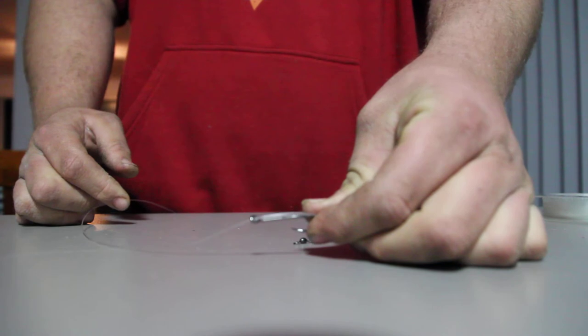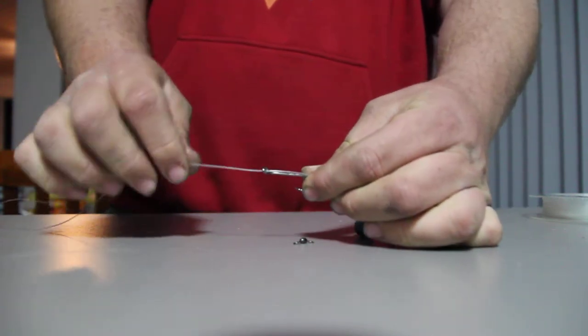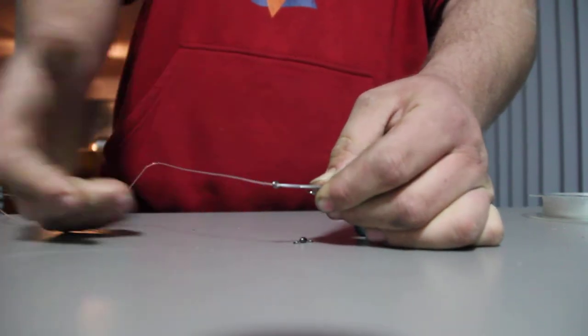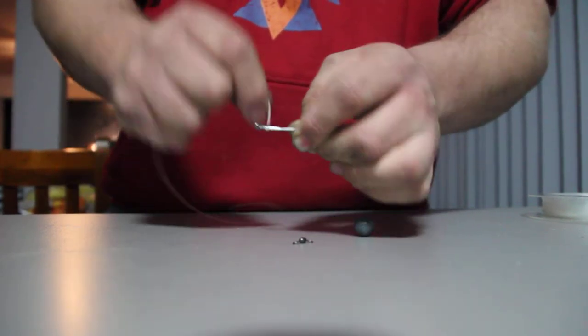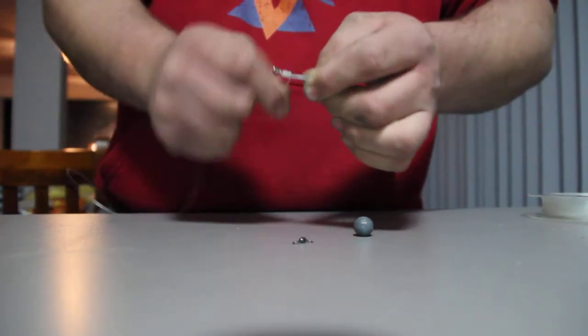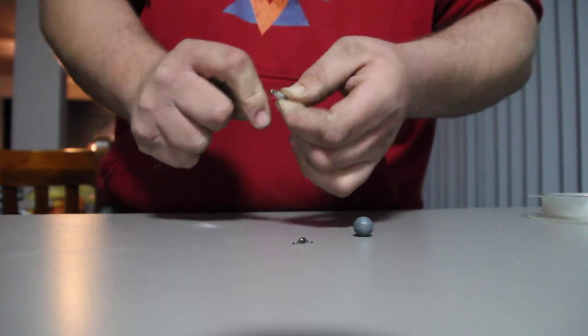So once the hook is parallel with the line against the shank, grab the tag end of your trace and wrap it down like you did the first hook. 8-10 times is more than enough, and then same thing,